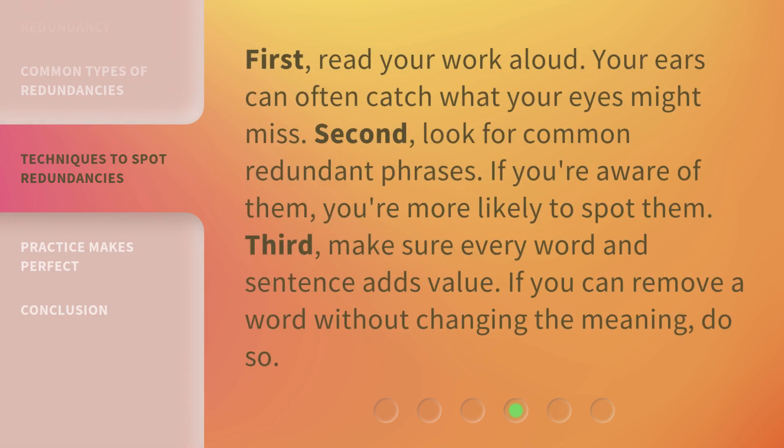First, read your work aloud. Your ears can often catch what your eyes might miss. Second, look for common redundant phrases. If you're aware of them, you're more likely to spot them. Third, make sure every word and sentence adds value. If you can remove a word without changing the meaning, do so.